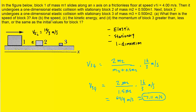For part B, we were asked whether the speed of block 3 is greater than, less than, or equal to the initial speed of block 1. We can see that the speed of block 3, which was 7.11 meters per second, is clearly larger than the initial speed of block 1 at 4 meters per second. So the correct answer to part B is greater.